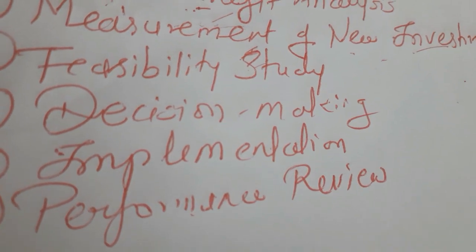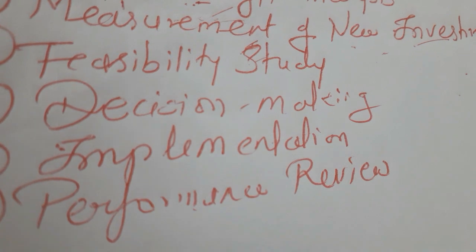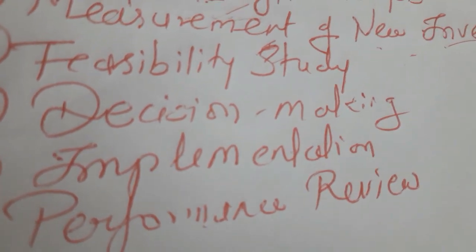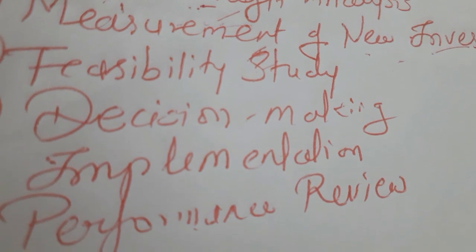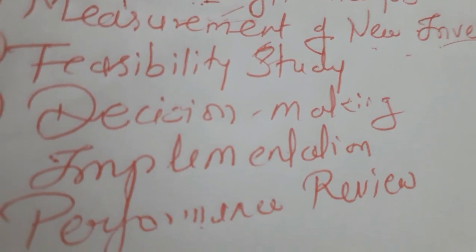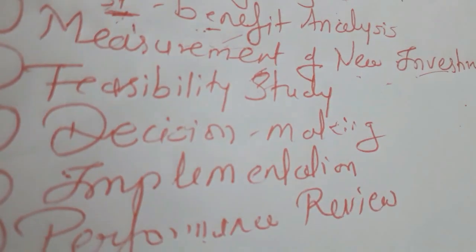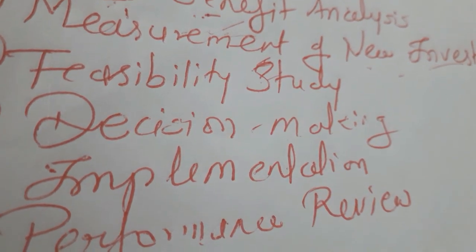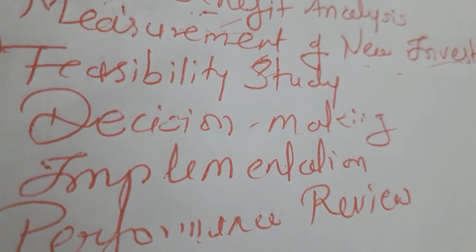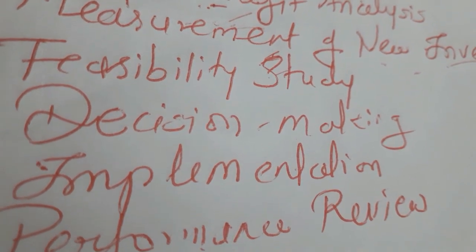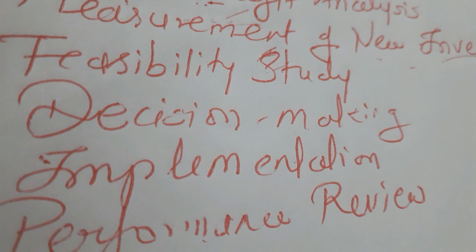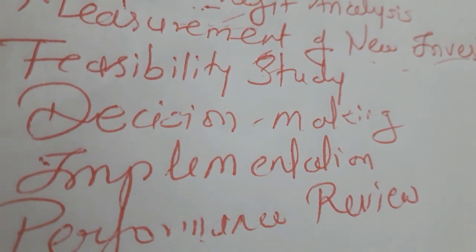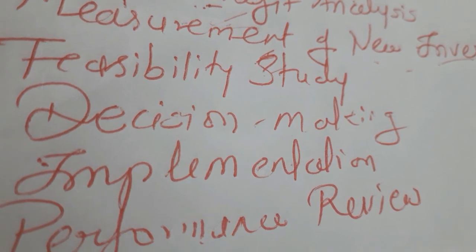The sixth step is implementation. Once you have finalized and decided to opt for a project, you implement it. Implementation includes: designing of the plant if you have placed an order for a plant, choice of machinery and equipment required for the setup, construction, quality planning, building, architect expenses, and installation of machinery — all of which are very important.